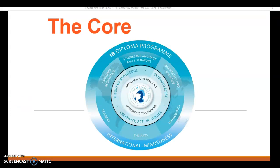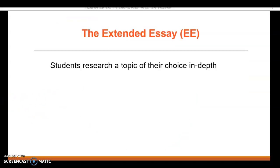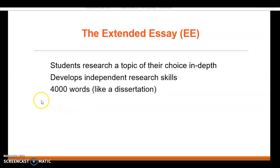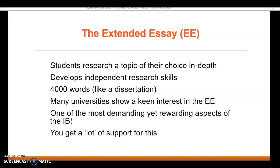Let's talk about the core. The core is made up of theory of knowledge, extended essay, and CAS - creativity, activity, service. The extended essay is a research paper. You choose one of the subjects you're studying for IB and do some independent research about a question of interest to you. It's very open and flexible, and gives you a lot of really useful research skills which you can take directly to university. The essay is 4,000 words long and you get a supervisor to help you from your chosen subject.